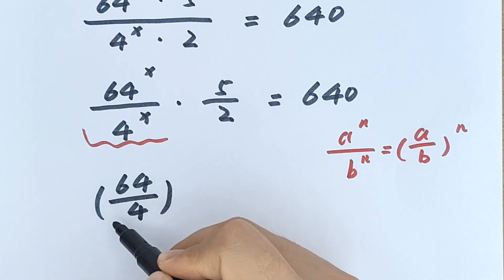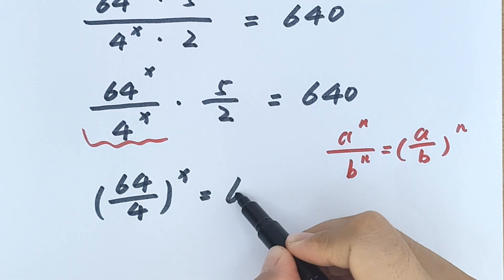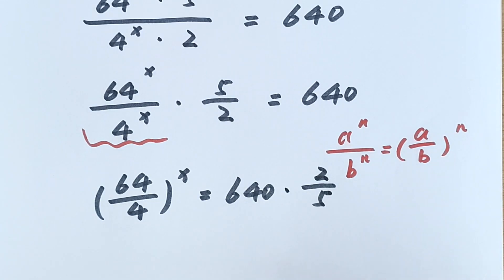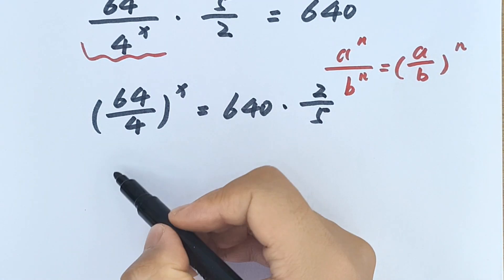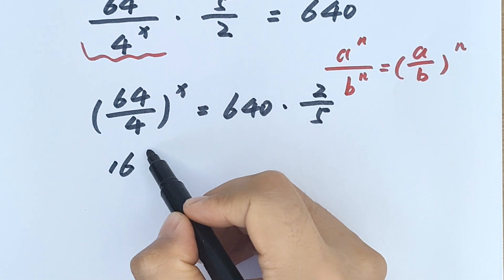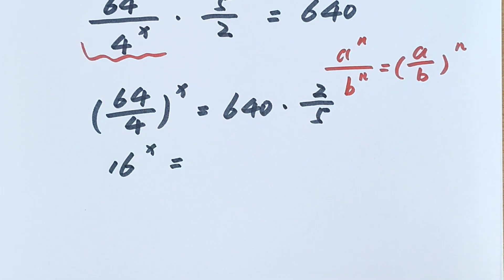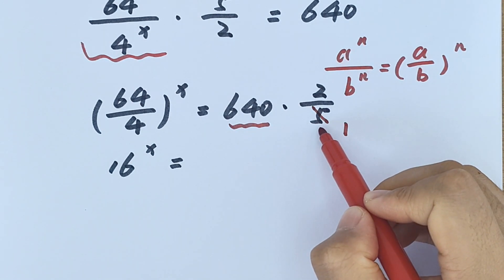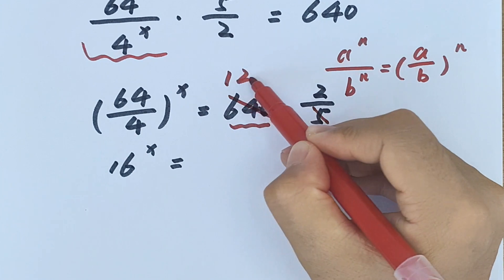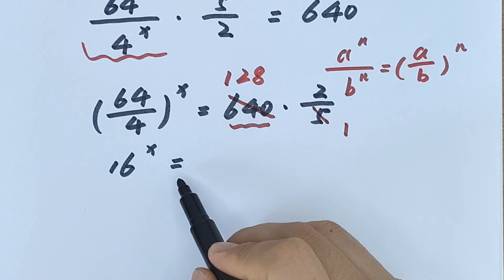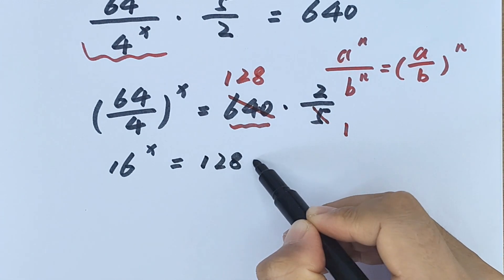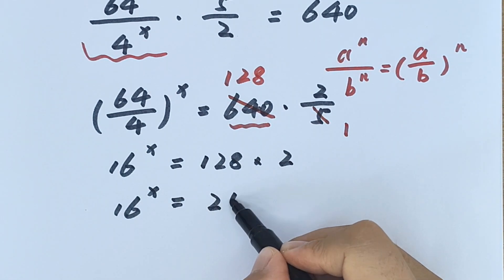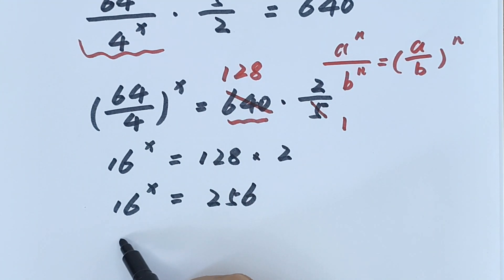64 divided by 4 equals 16, so 16 to the power of x equals 640 times 2 over 5, which equals 256. So 16 to the power of x equals 256.